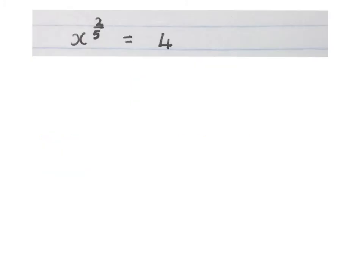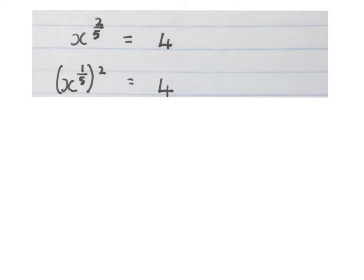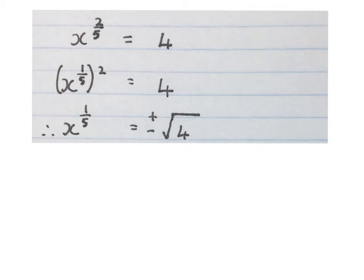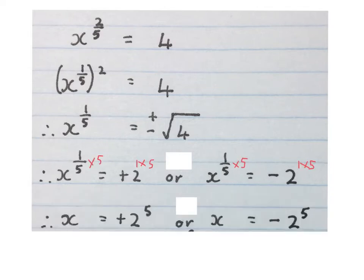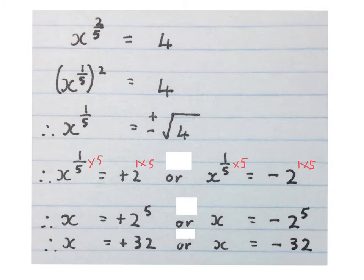This is our first equation, solve for x. We've got x to the power of 2 over 5 equals 4. First we write x to the power of a fifth, all squared, is 4. Then we square root both sides to get rid of the square, getting plus or minus the square root of 4. We get x to the power of a fifth equals plus 2, or x to the power of a fifth equals minus 2. Then we get x equals plus 2 to the power of 5, or x equals minus 2 to the power of 5. So x equals plus 32, or x equals minus 32.